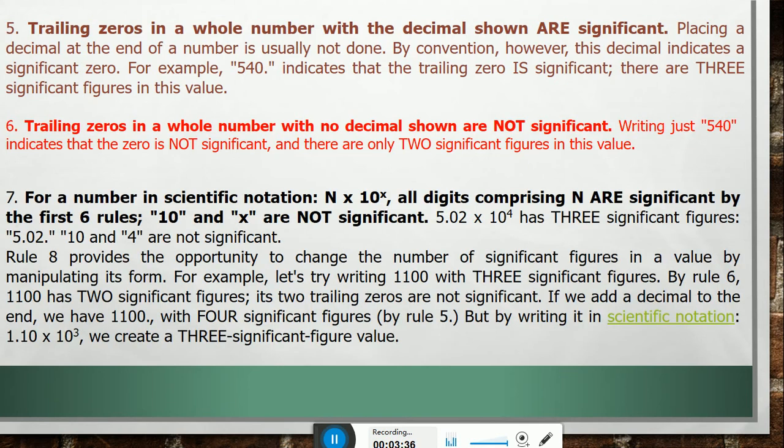And last rule is for a number in scientific notation: N × 10^x, all digits comprising N are significant by the first six rules. The 10 and x are not significant. 5.02 × 10^4 has three significant figures. 5.02, the 10 and 4 are not significant.